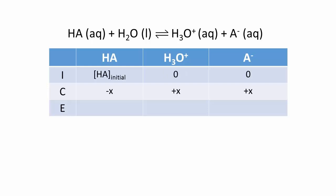The ICE table's change line is done as always, and the line of the final equilibrium concentrations is the sum of the first two lines. Given that the dissociation constants are typically quite small, x is often negligible compared to the initial value of HA. So in a first instance, we ignore its contribution to the equilibrium concentration of HA.